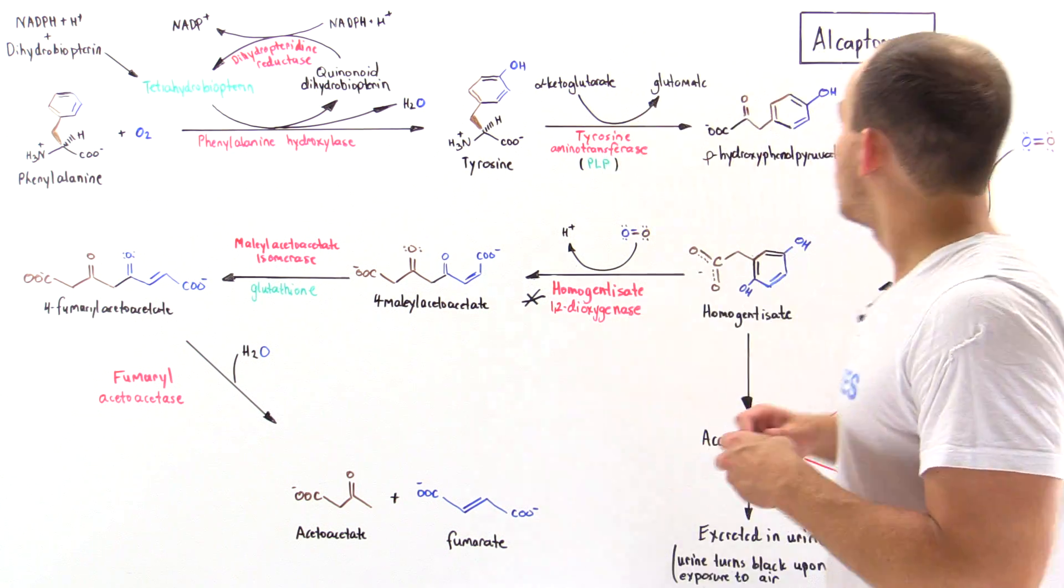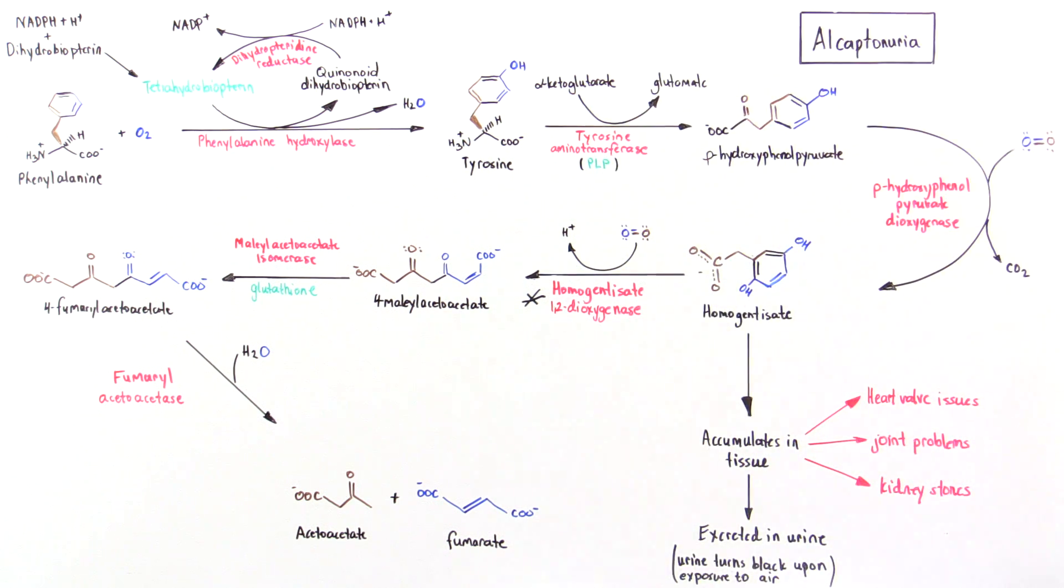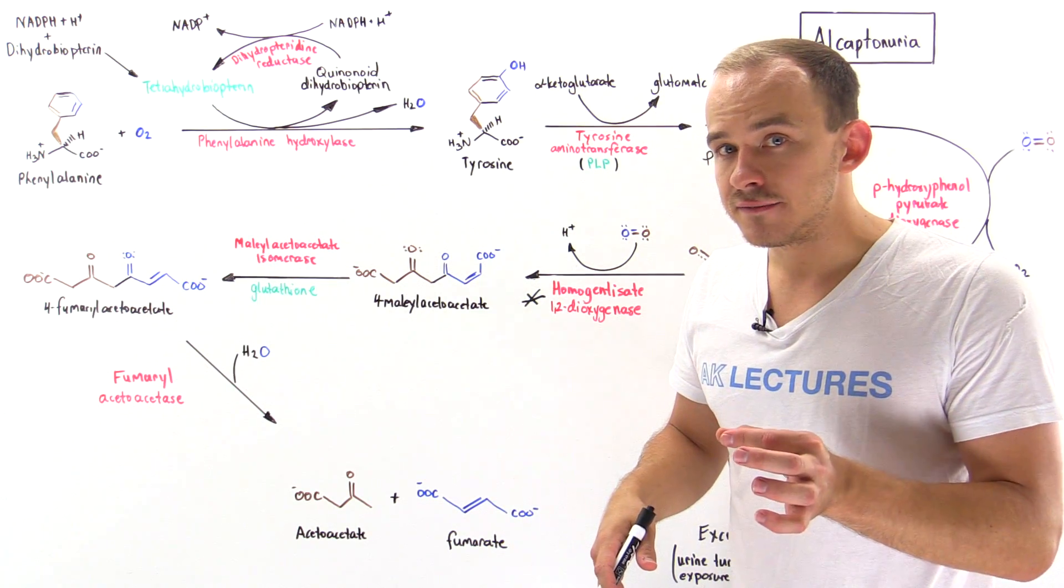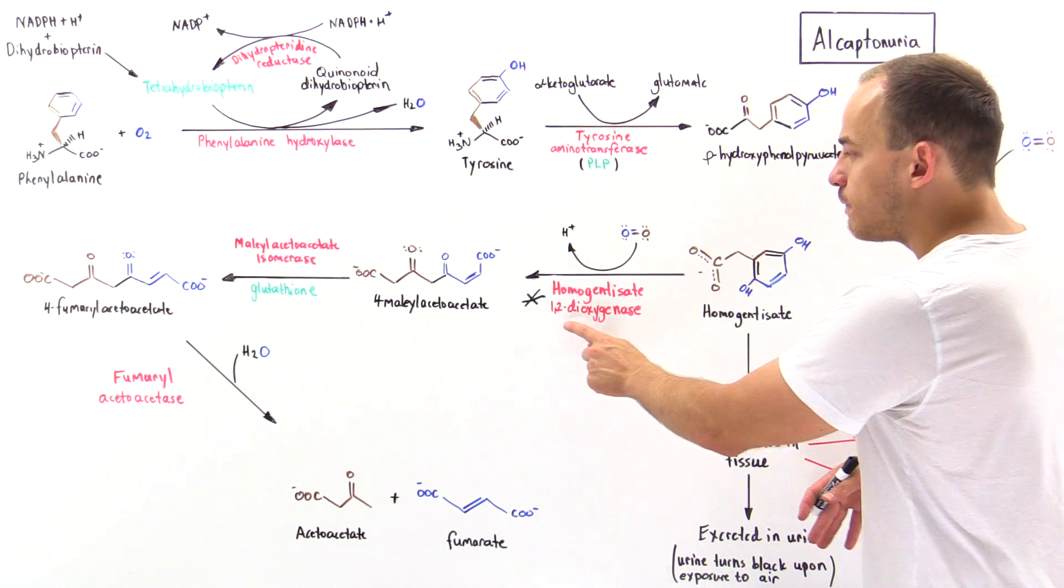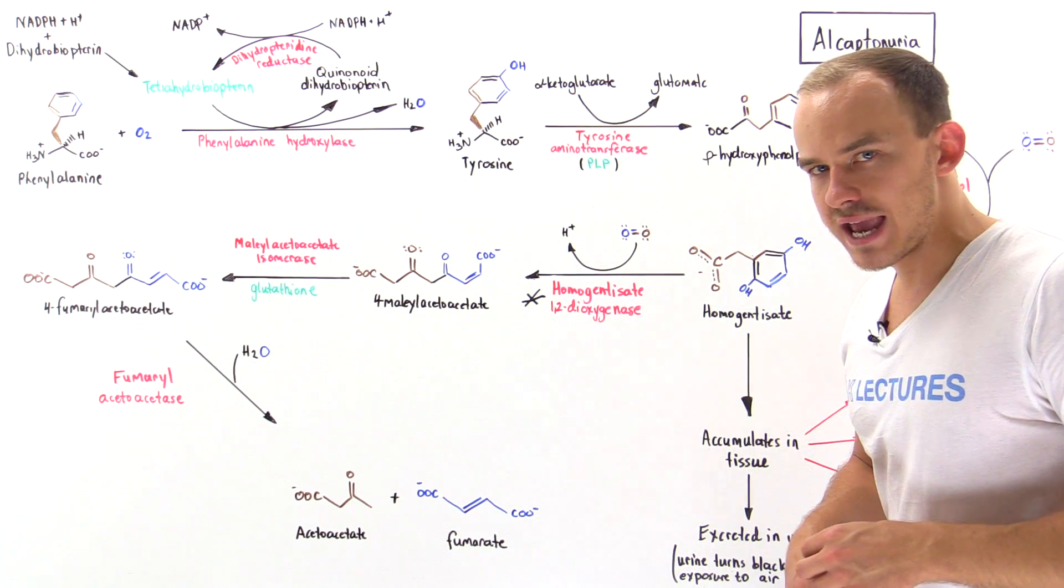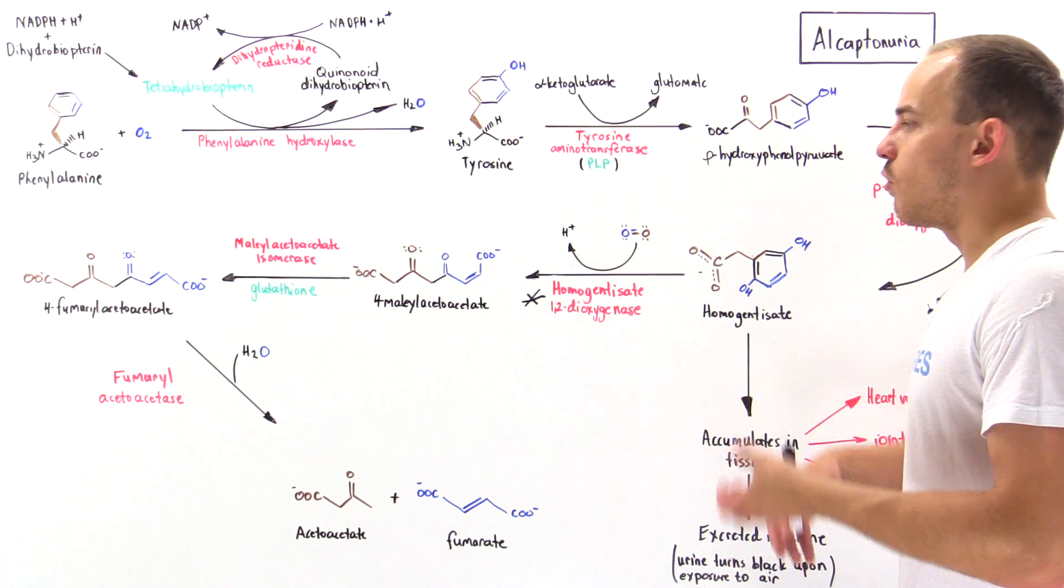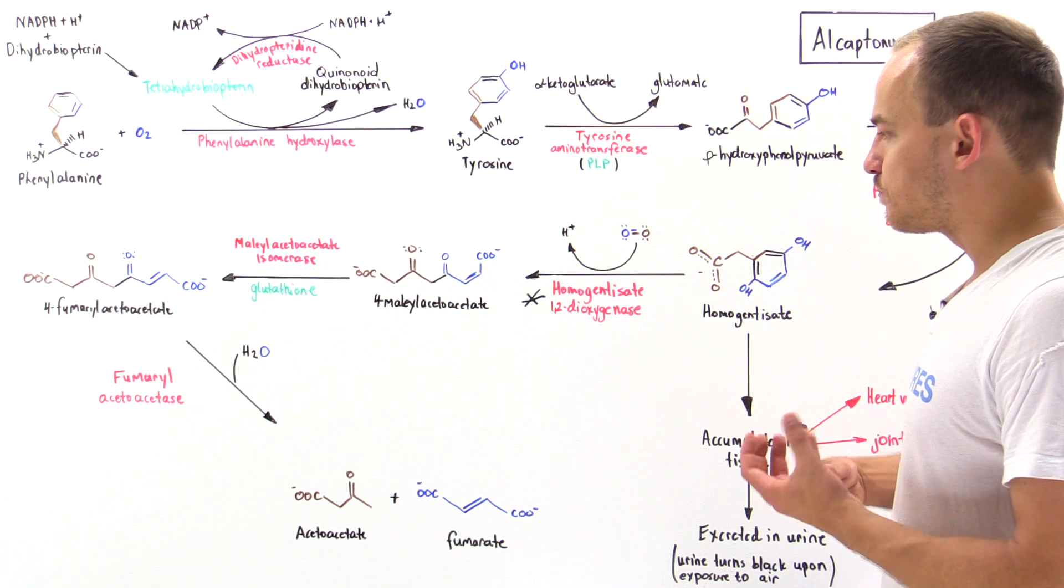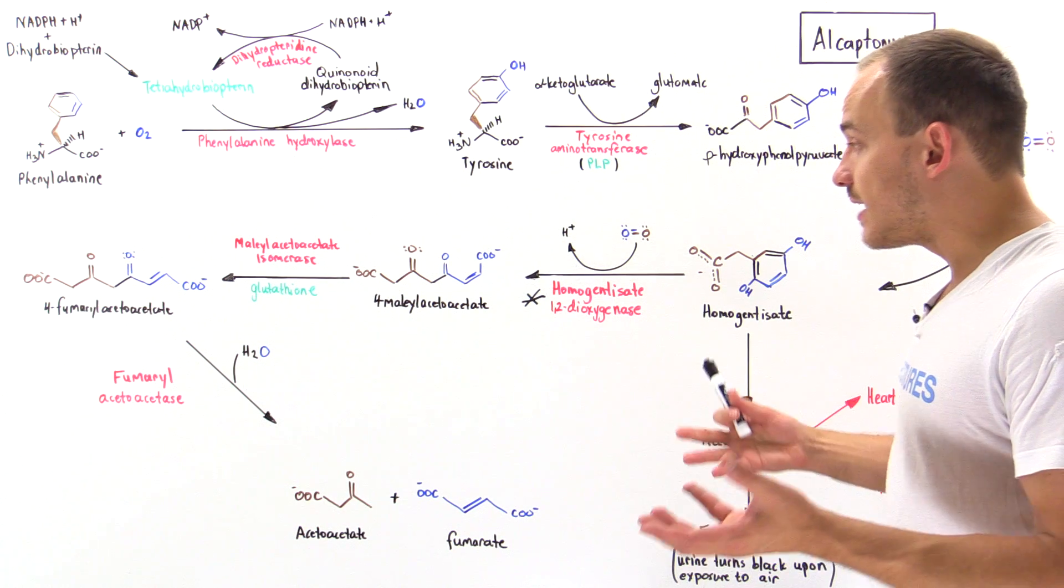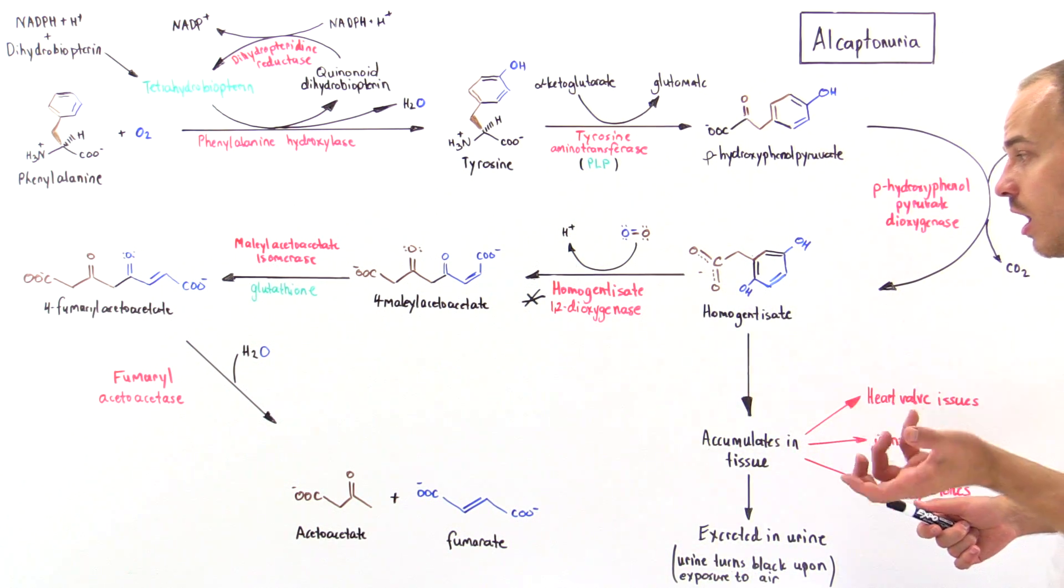Now in a person who has alcaptanuria, they have genes that are defective. The genes that code for this enzyme homogentisate 1,2-dioxygenase essentially code for a defective enzyme. So this enzyme's activity isn't high or the enzyme doesn't have any activity at all.